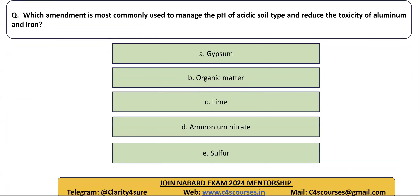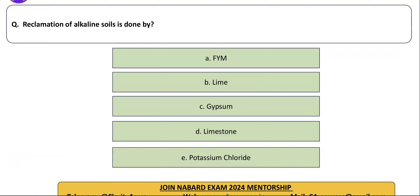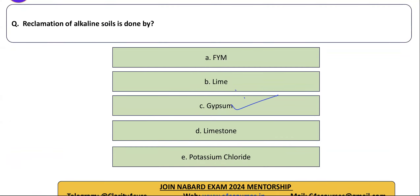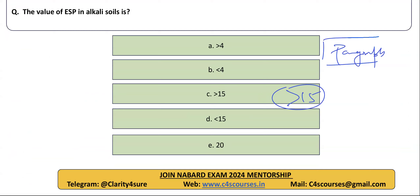Which amendment is commonly used to manage the pH of acidic soil and reduce the toxicity of aluminium and iron? Lime is the right answer. Reclamation of alkaline soil is done by gypsum. The value of Exchangeable Sodium Percentage (ESP) in alkali soil is less than 15. Last year, a paragraph-based question came from this concept about the classification of soil.